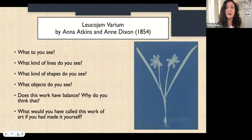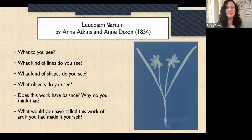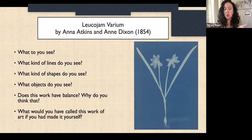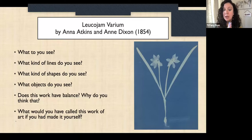Here's another example of a cyanotype from 1854 by Anna Atkins and Anne Dixon — this one is a great example of balance. Ask: What do you see? What lines? What shapes? What objects? Does this work have balance? You can explain: 'If I fold it in half, would it almost fit together? Would it be almost like a mirror image?' Ask why they think that, and what they would have called this work of art if they had made it.